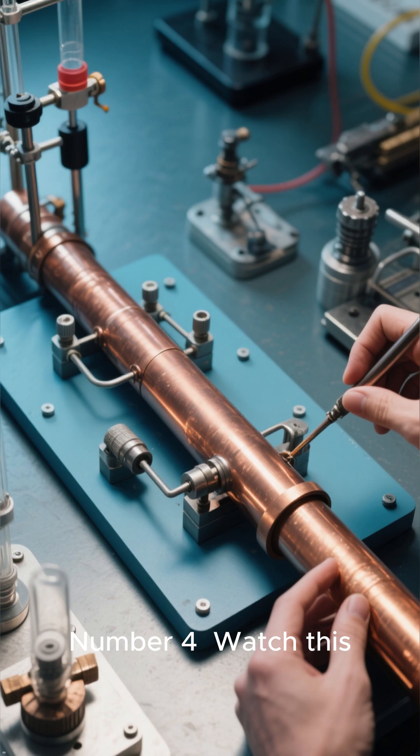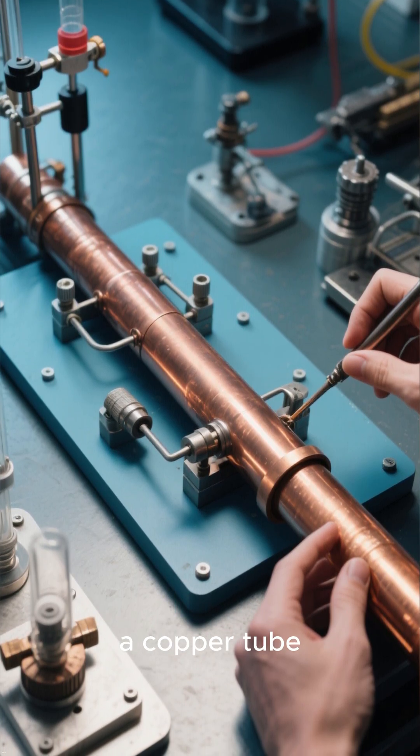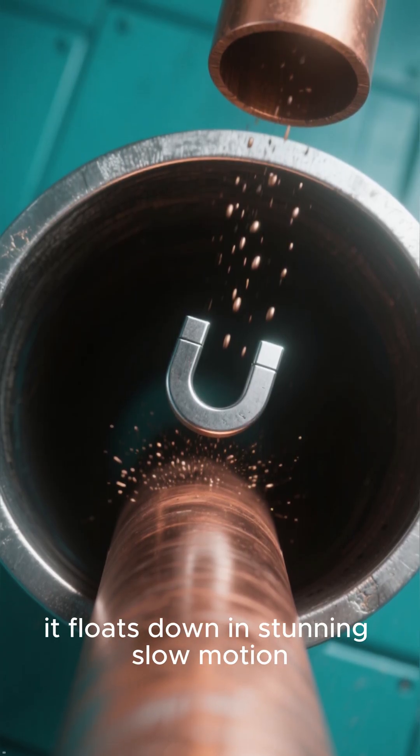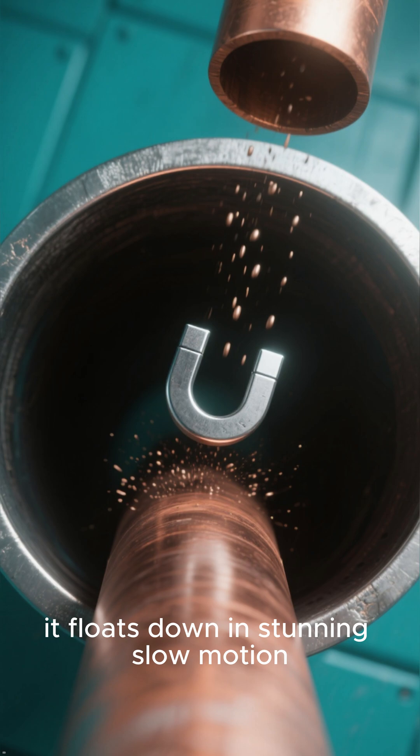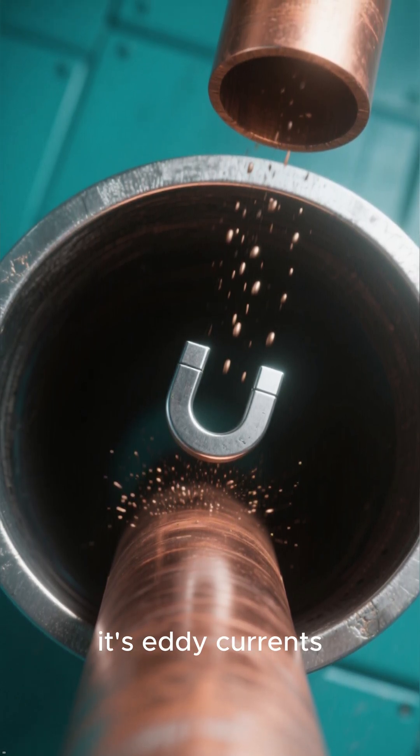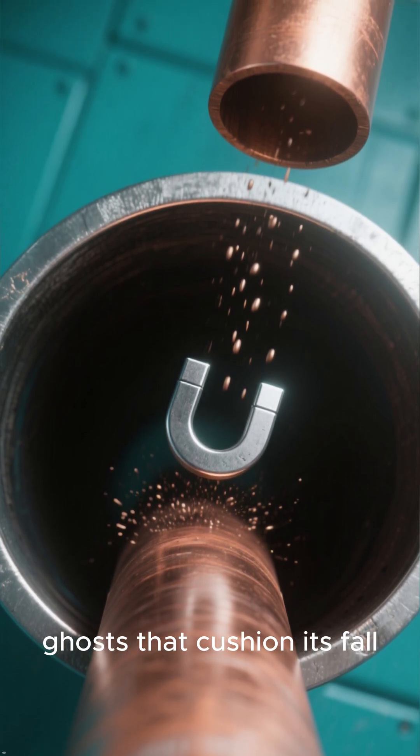Number 4: Watch this. Drop a strong magnet through a copper tube. Instead of falling, it floats down in stunning slow motion. It's not magic. It's eddy currents creating magnetic ghosts that cushion its fall.